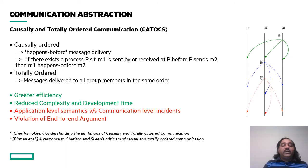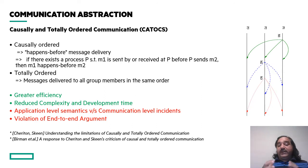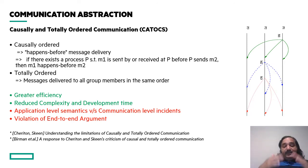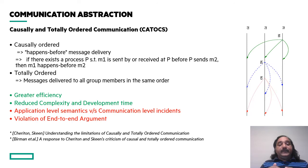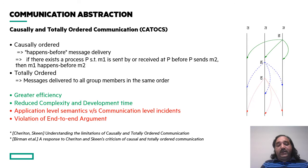The totally ordered abstraction guarantees that messages delivered to all group members are in the same order. While these communication abstractions between distributed system components might provide greater efficiency and reduced development time, there are concerns about them capturing communication-level incidents rather than application-level semantics. And because they require bookkeeping about various messages, there are concerns about violation of the end-to-end argument as well.